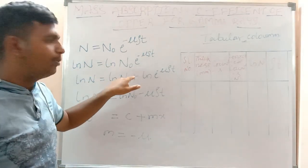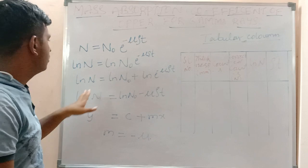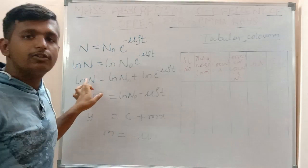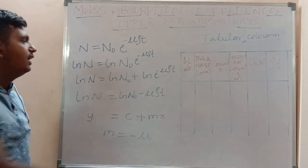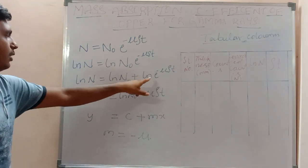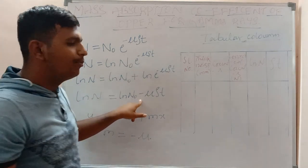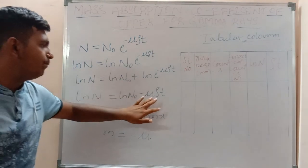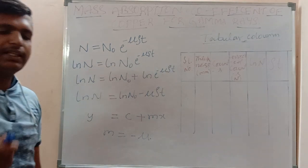By applying ln to both sides: ln(N) = ln(N₀ · e^(−μρt)). Rearranging, we get ln(N) = ln(N₀) + ln(e^(−μρt)). Since ln and e cancel, we obtain: ln(N) = ln(N₀) − μρt.